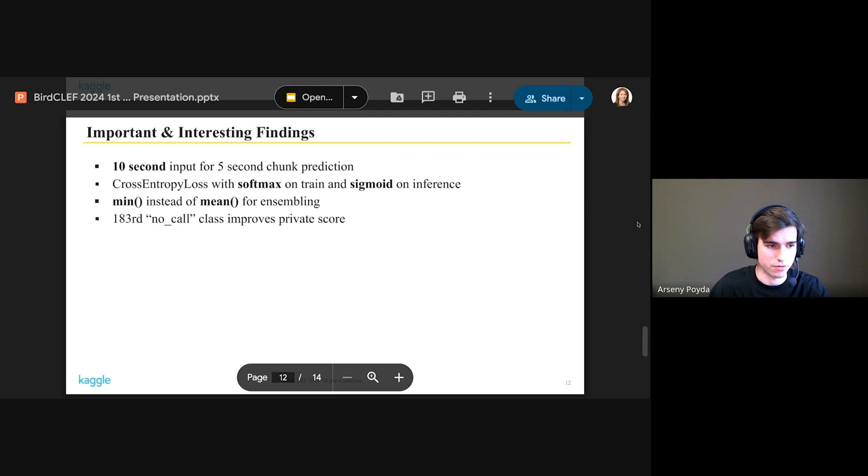Of course, it was surprising that minimum function instead of averaging for ensembling can provide some good results. And the first point we didn't mention in the presentation is that adding a new no-call class improves private score. We didn't use that because public score was reduced using this.